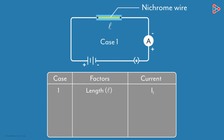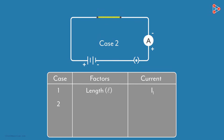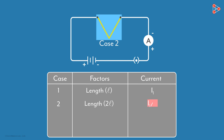Now let's try playing with the factors a bit. In the second case, we double the length of the nichrome wire but keep the thickness the same — we just double the length. When you measure the reading, you will notice that the current is half of the current measured originally. When the length was doubled, the current halved.